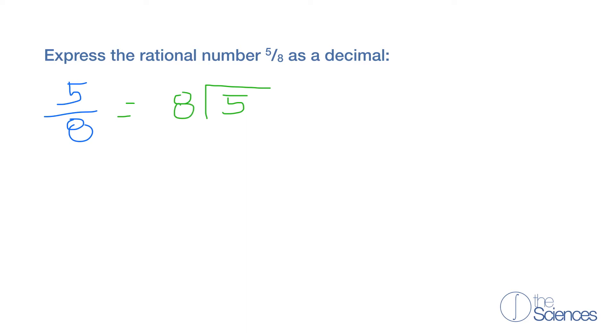So how many times does 8 go into 5? Well that's 0. So here we're going to write 0. We're going to add a 0 and then we're going to drop that down.